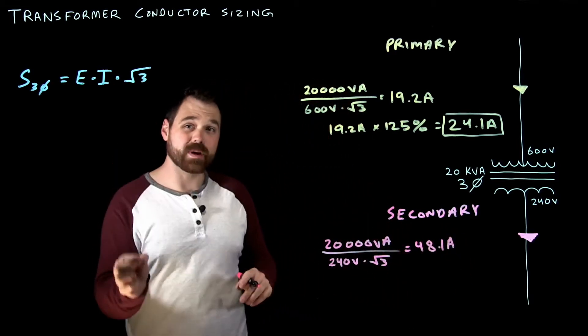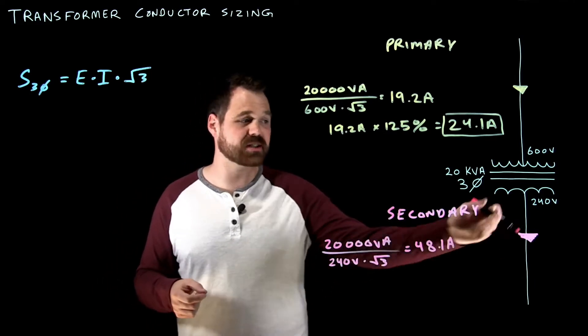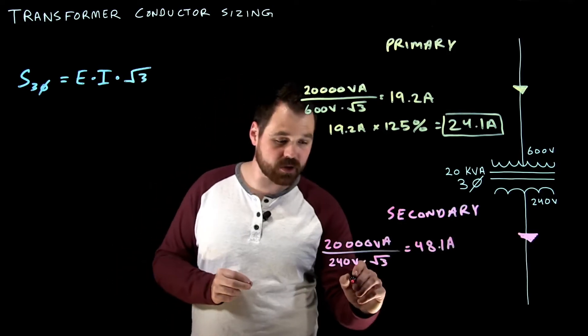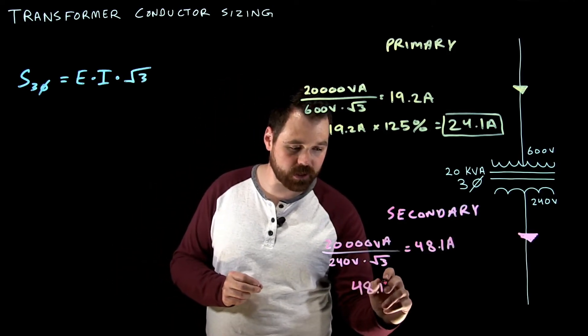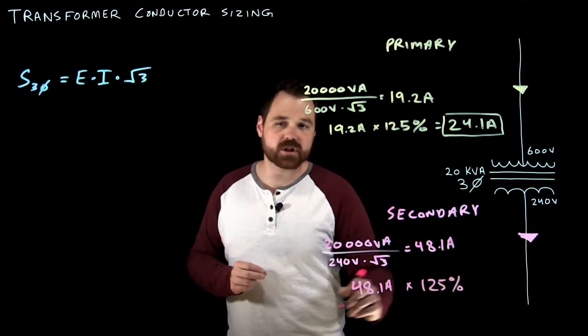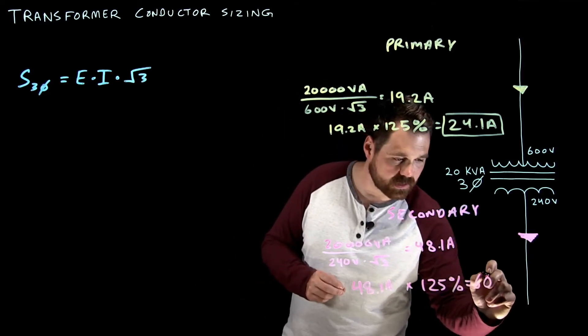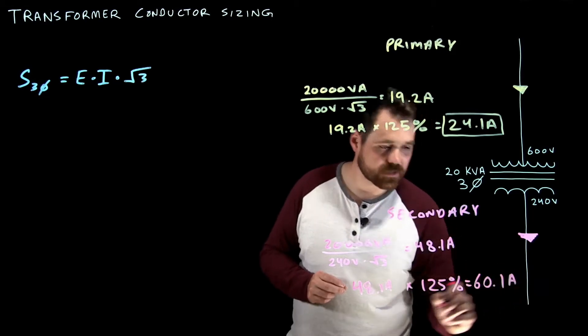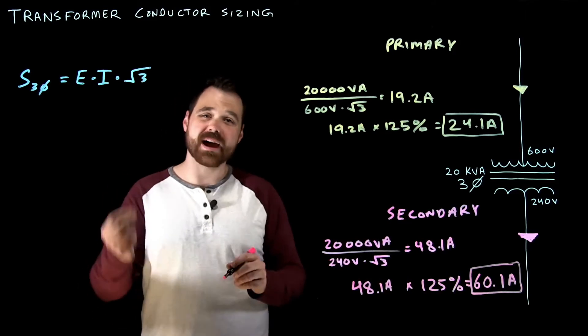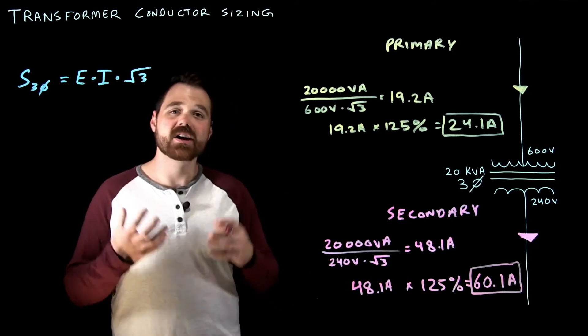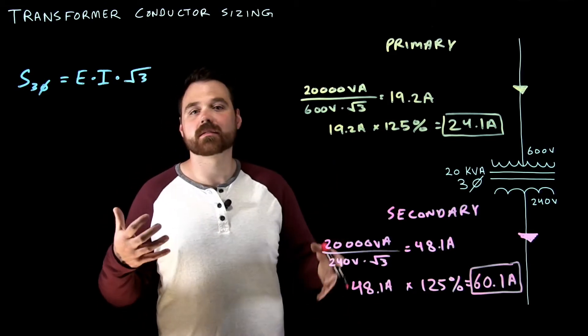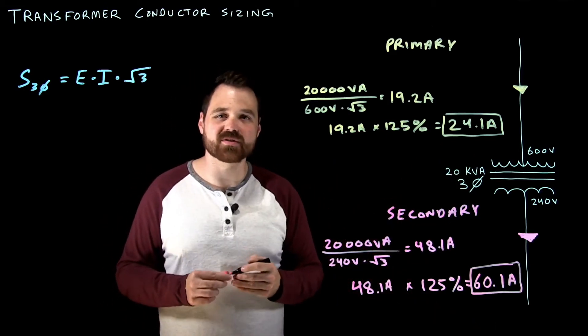And that is going to give us 48.1 amps. Now that's our rated current, that's the rated current of the secondary of the transformer. But we need to take that number 48.1 amps, and multiply it by 125%, which gives us 60.1 amps. Now this number, that is the required ampacity or the minimum ampacity of our conductor in order to safely be connected to the secondary of that transformer.